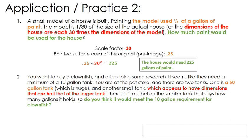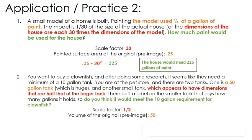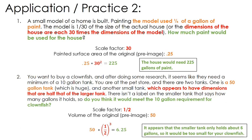This is a volume example. You want to buy a clownfish and research shows they need a minimum of a 10-gallon tank. At the pet store you see two tanks: one is a 50-gallon tank, and another smaller tank that appears to have dimensions half that of the larger tank. There's no label on the smaller tank saying how many gallons it holds — would it meet the 10-gallon requirement? The common misconception is to take 50 and multiply by one-half. With a scale factor of one-half and an original volume of 50 gallons, you take 50 and multiply by one-half cubed, because for volume you must cube the scale factor. That gives you 6.25 gallons — not big enough for your clownfish. Looks like you have to buy the 50-gallon tank.